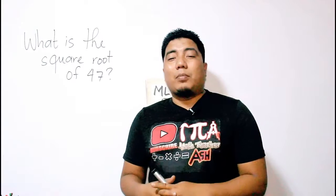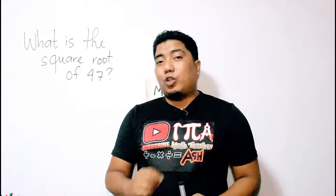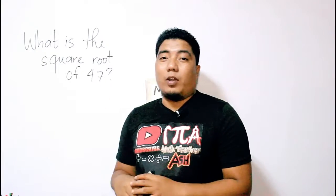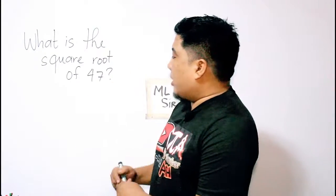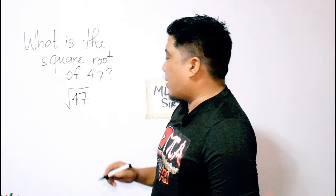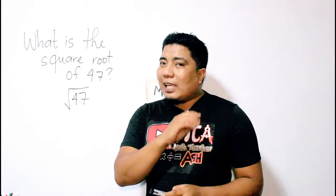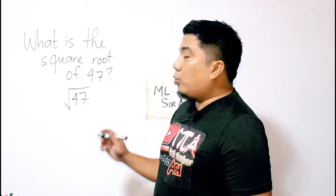That is by the use of the two nearest perfect squares of the given square root. Now, square root of 47, that is written in this mathematical expression square root of 47. The technique here is very simple. What you need to do is to consider the next perfect square.